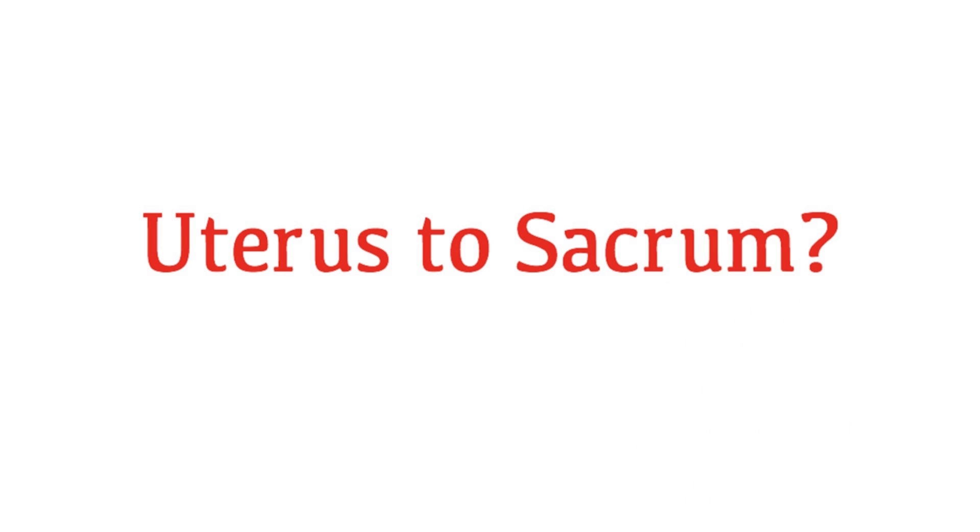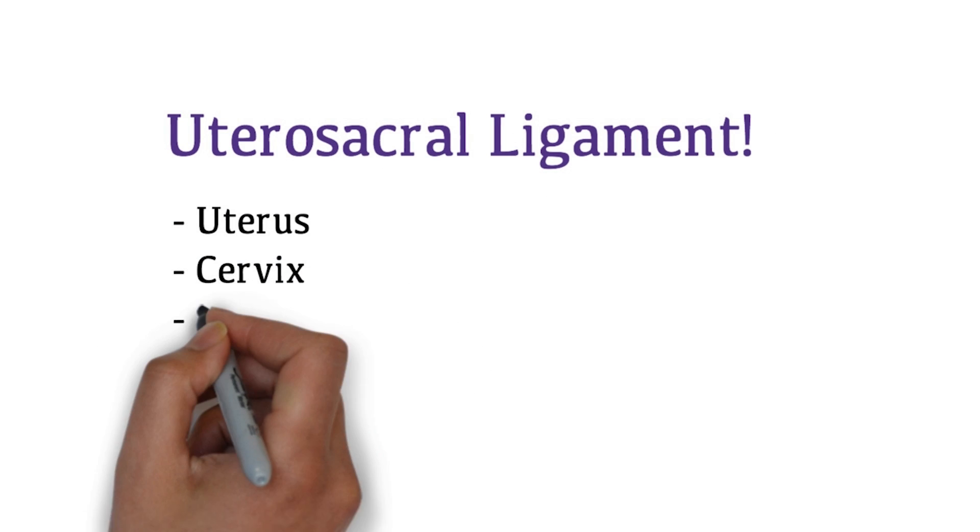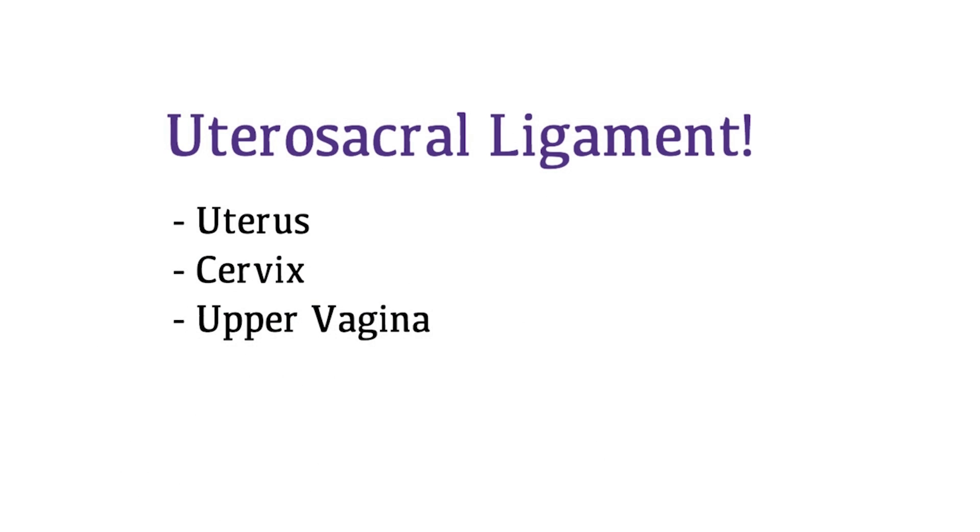Can you name the ligament that attaches uterus to the sacrum? Uterosacral ligament. It supports the uterus, cervix, and upper vagina. It prevents vagina and uterus from prolapsing.